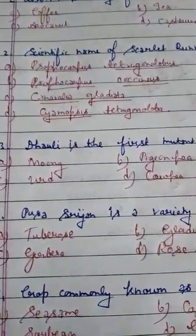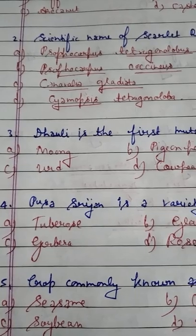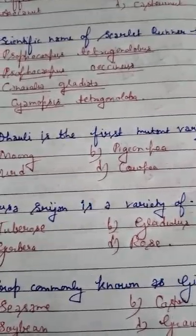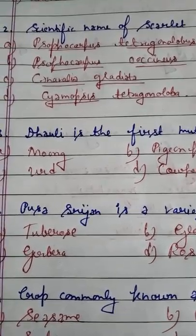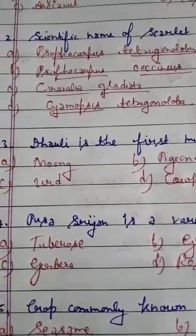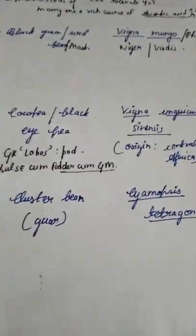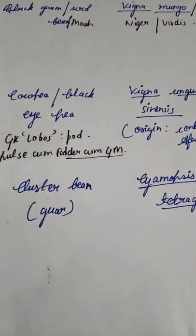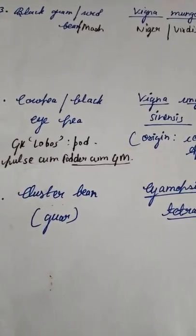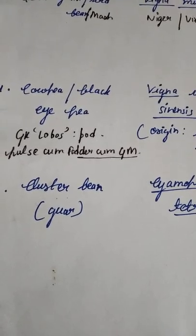Question number 3: Dolly is the first mutant variety of — option A moong, option B pigeon pea, option C urad, option D cow pea. Dolly is a very important variety, please remember it. Cluster bean variety Pusa Sadabahar is an important variety of cluster bean.